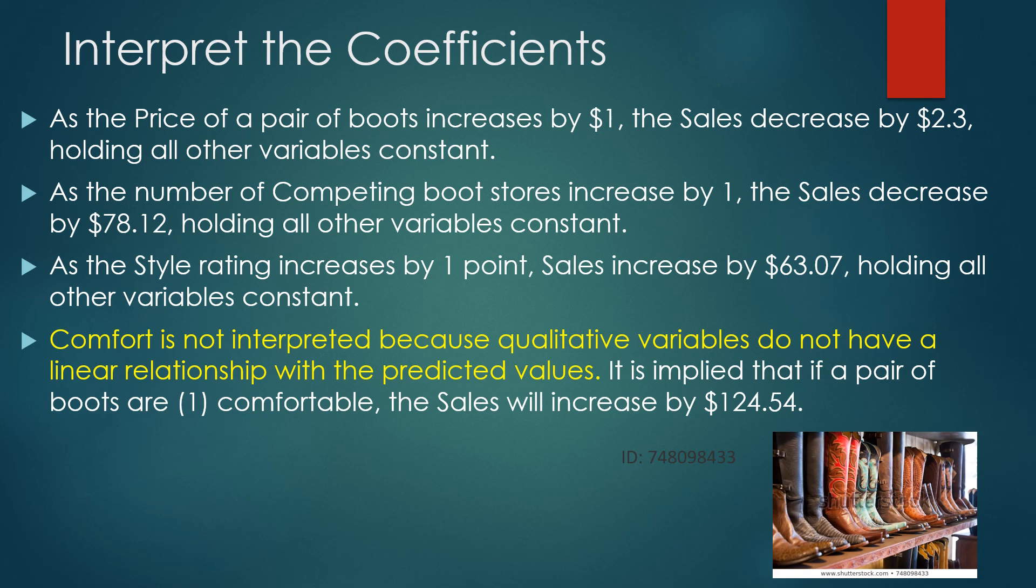We are going to avoid interpreting a qualitative variable in a model, and that's because it's called a dummy variable, and it doesn't have a linear relationship. So I'm not going to say as X goes up by 1, Y goes up or down by that coefficient's amount. Instead, it simply implies that if a pair of boots get a rating of 1, meaning they're comfortable, sales will go up by 124.54. We just don't put it into that linear sentence form.